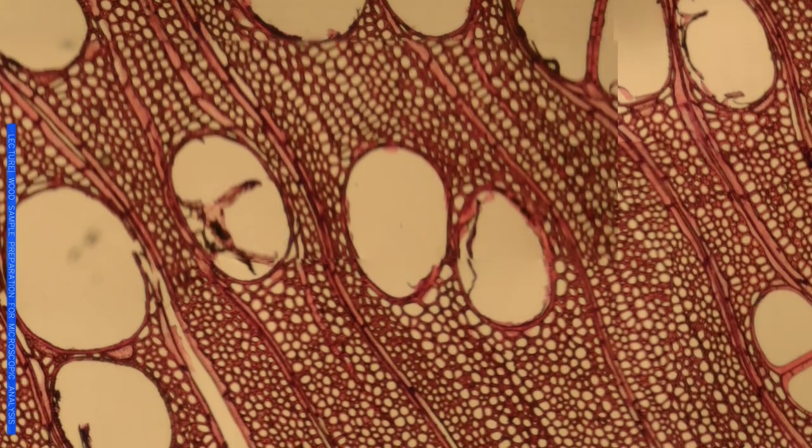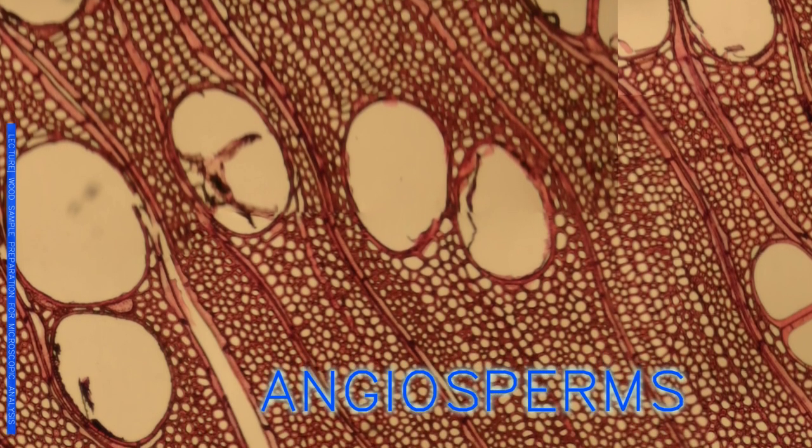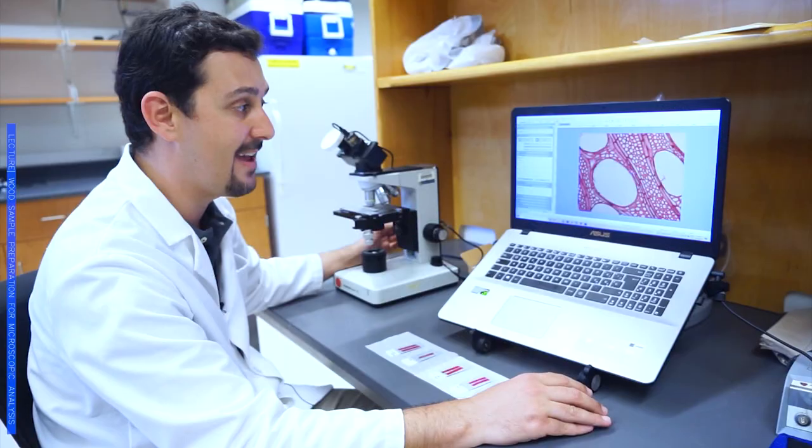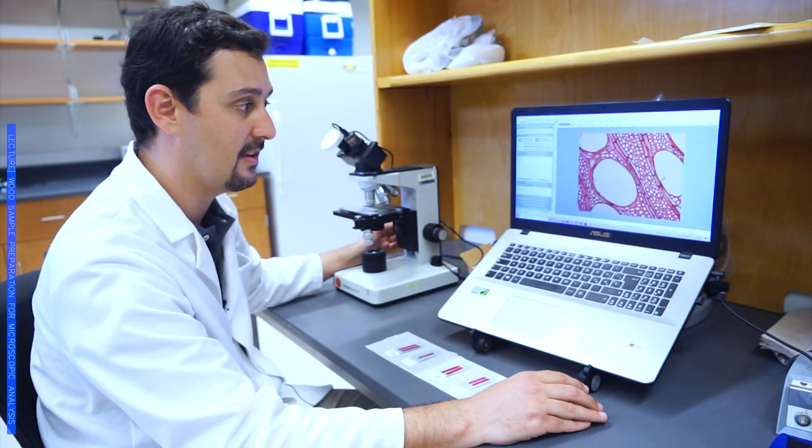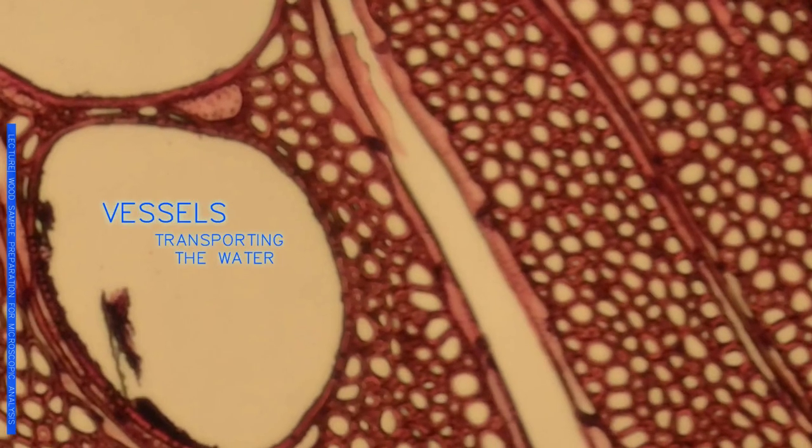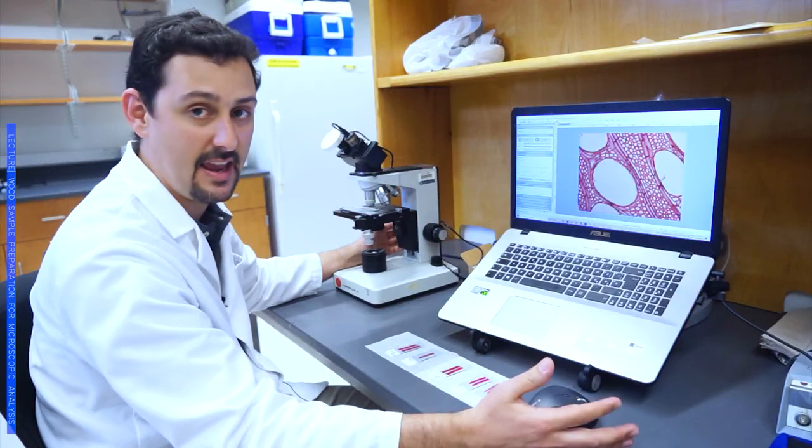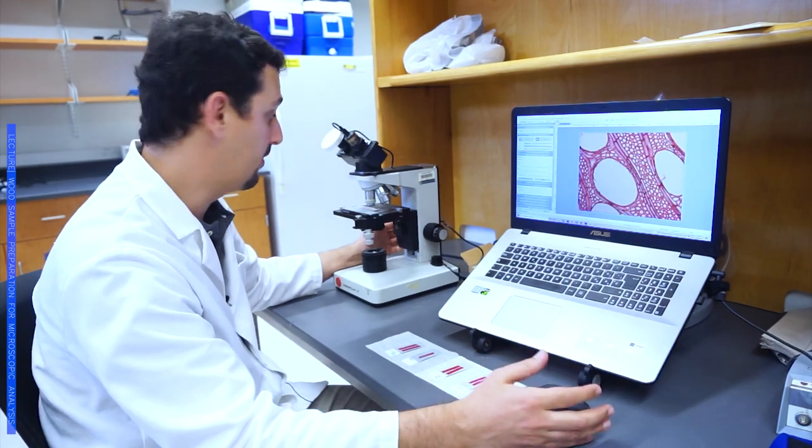Over here, we are able to see really well all the features in the wood. For example, in this case, we are looking at an angiosperm. This is a softwood type of tree. What we can see very clearly are the vessels. This is where the plant is transporting the water mostly, and all the fibers that are giving sustain to all the tissue of the plant.